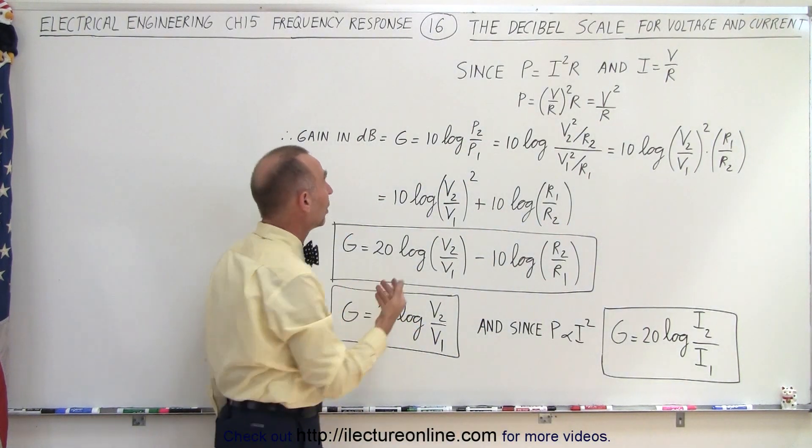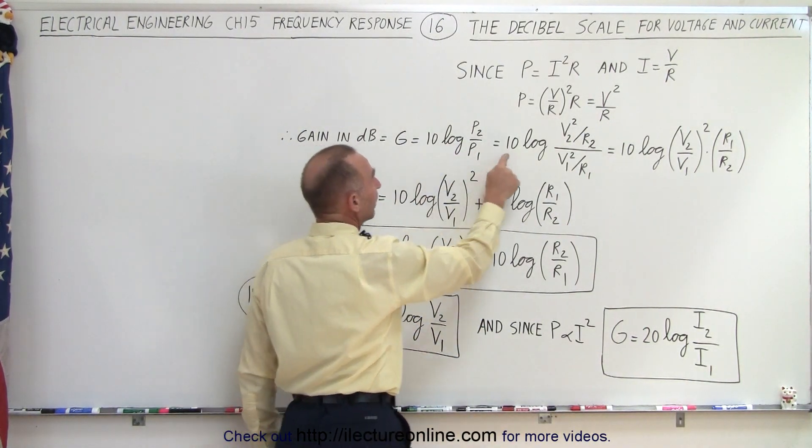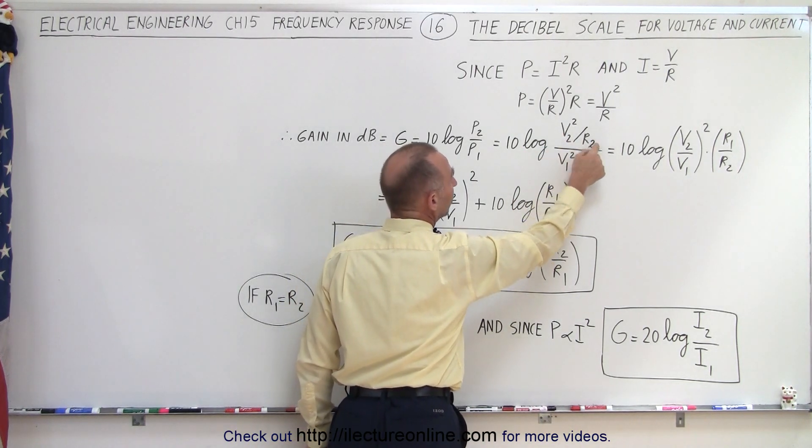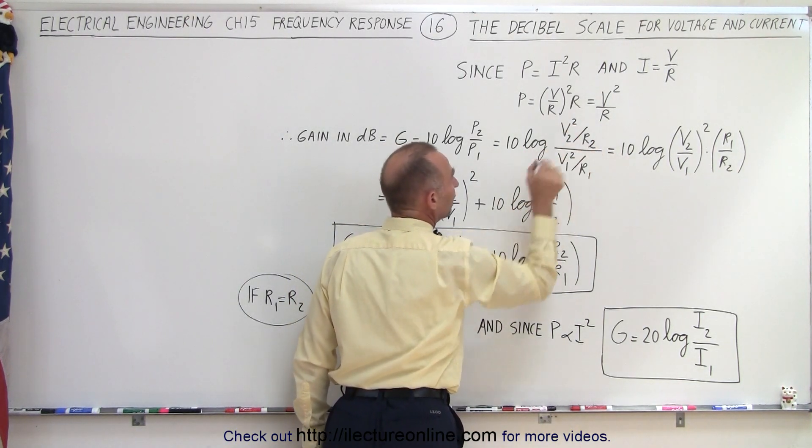Which means that we can then find the gain as being 10 times the log of the ratio of V squared over R for the final over the initial.